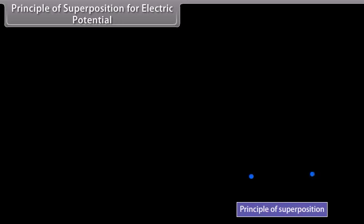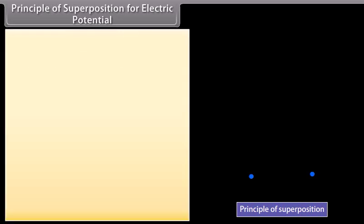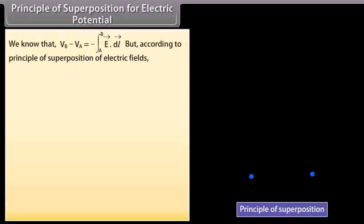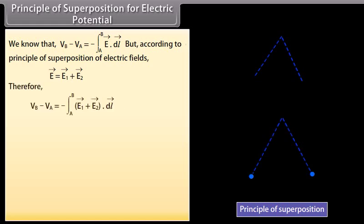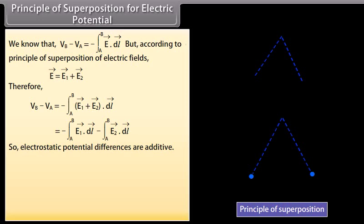Principle of superposition for electric potential. Consider two point charges plus Q1 and plus Q2. Take any two points A and B in the combined electrostatic field of the two charges. Choose a curve L between A and B. We know that V_B minus V_A equals minus the integral from A to B of E·dL. According to the principle of superposition, E equals E1 plus E2. Therefore, V_B minus V_A equals minus the integral from A to B of E1·dL, and electrostatic potential differences are additive.